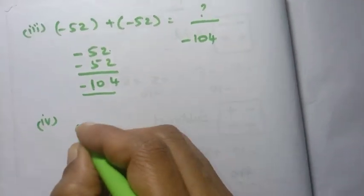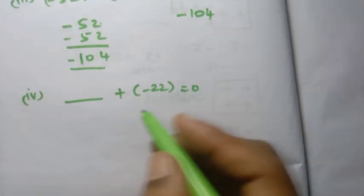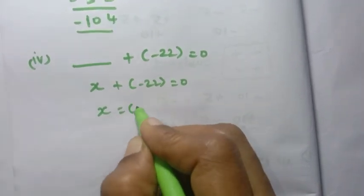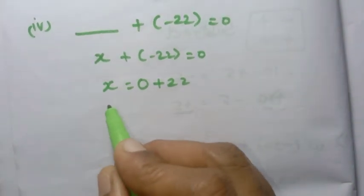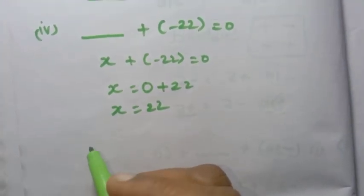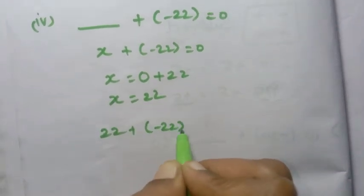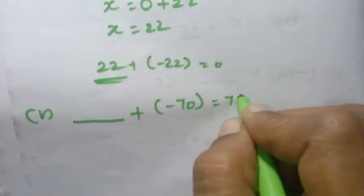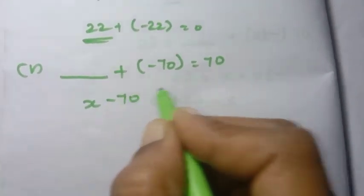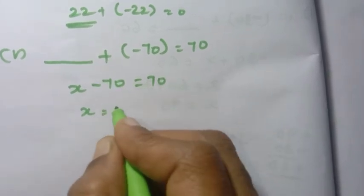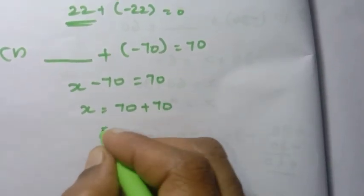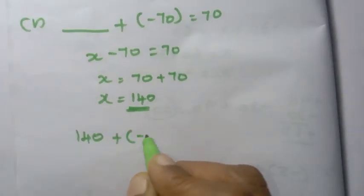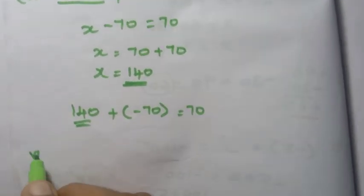Fourth sum: x plus minus 22 equals 0. So x equals 0 minus the minus 22 — bringing minus 22 to the other side gives plus 22. So x equals 22. Check: 22 plus minus 22 equals 0. Fifth sum: x minus 70 equals 70. Moving minus 70 across gives plus 70, so x equals 140.